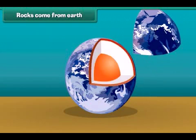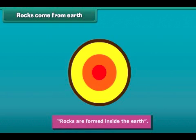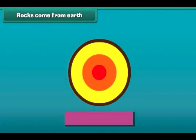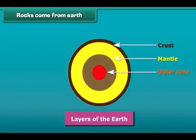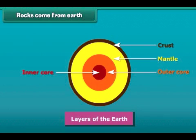All rocks come from the earth, and all three layers of the earth are made up of rocks. The outermost layer is called the crust, which is formed by solid rocks and soil. The middle and innermost layers are known as the mantle and the core respectively. The mantle and outer core are very hot, so rocks are found in melted form there. In the inner core, rocks are solid due to high pressure.